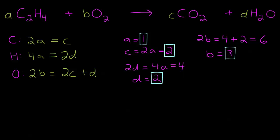So now let's plug in each of the variables and see if our equation makes sense. So A is 1, so we have C2H4 plus B is 3, so 3O2, reacts to form C is 2, so 2CO2 plus D is 2, 2H2O.